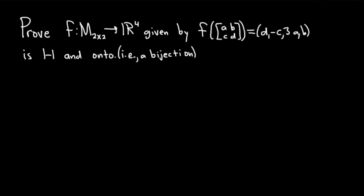In this video we're going to give a very careful proof of the following statement. We're going to prove that this function, which maps the set of all 2x2 matrices into the set of all 4-tuples given by this formula, is 1 to 1 and onto — in other words, it's a bijection.